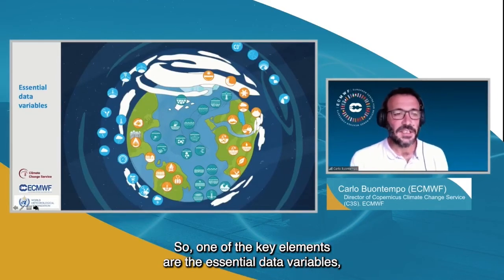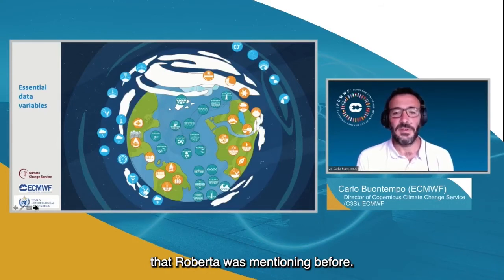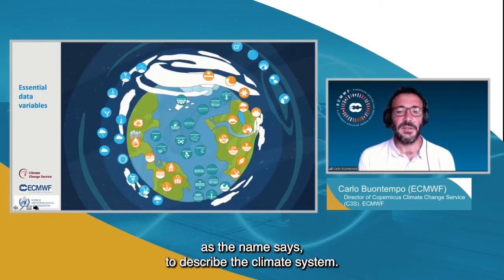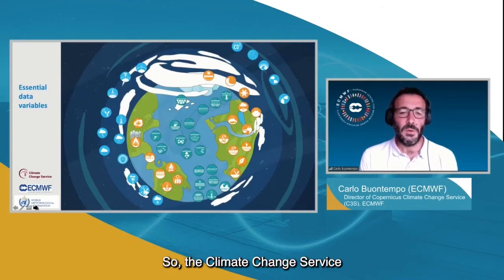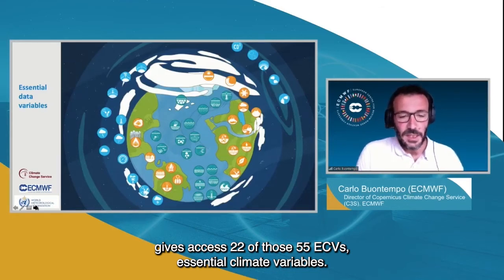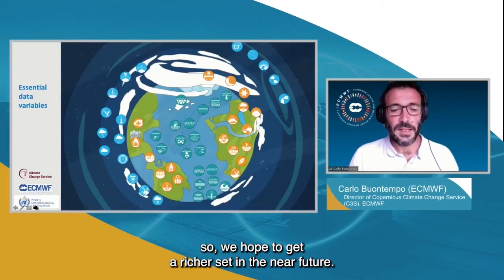One key element is the Essential Climate Variables as defined by the Global Climate Observing System. This is a set of variables considered essential for describing the climate system. The Copernicus Climate Change Service gives access to 22 of those 55 ECVs, and this list is growing over time, with hopes for a richer set in the near future.